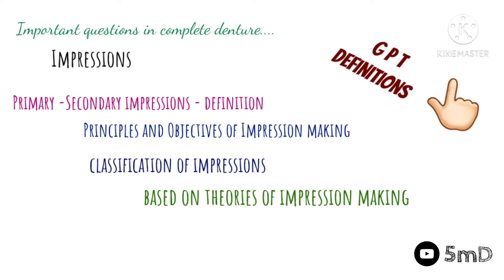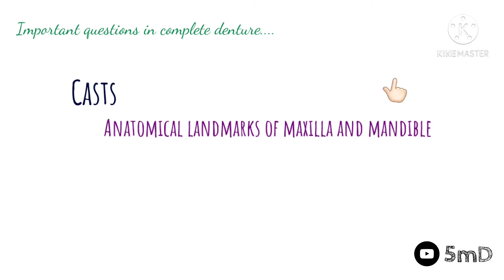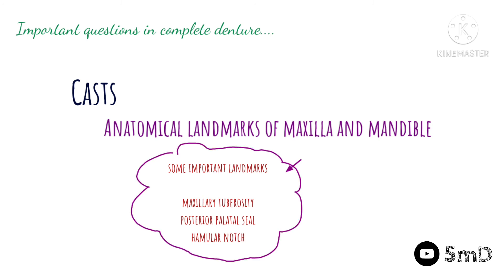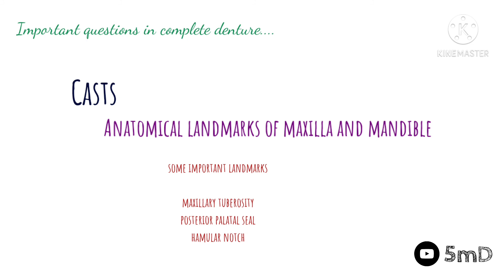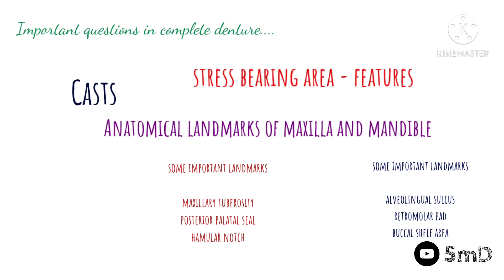Before moving on to the casts, we need to know about the anatomical landmarks of the maxilla and mandible — check out the video on anatomical landmarks. In particular, certain anatomical landmarks form an important five-mark question: for the maxilla, the maxillary tuberosity, posterior palatal seal and how to record it, and the hamular notch. For the mandible, the alveolo-lingual sulcus, buccal shelf area, and the retromolar pad. In common, the features of a stress-bearing area can also be asked in a viva.